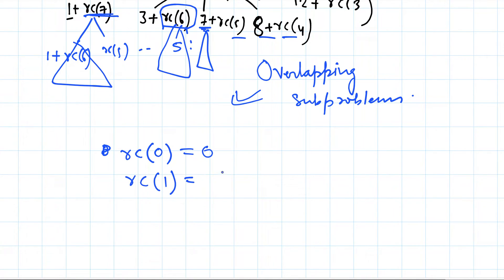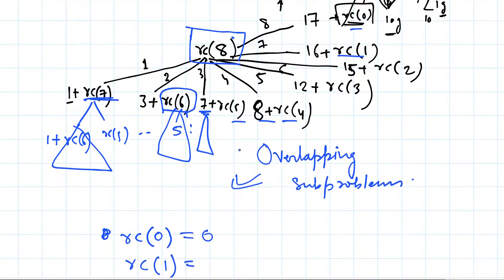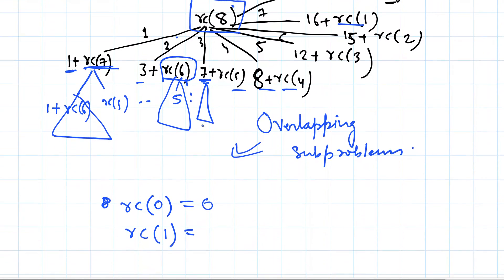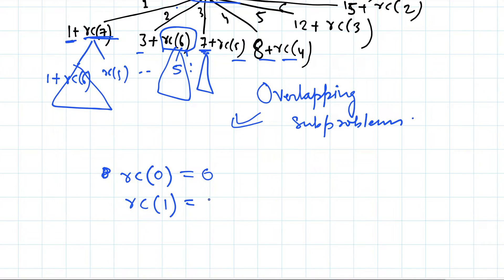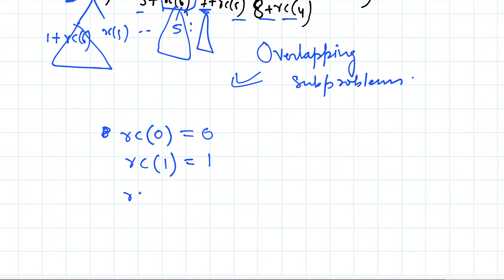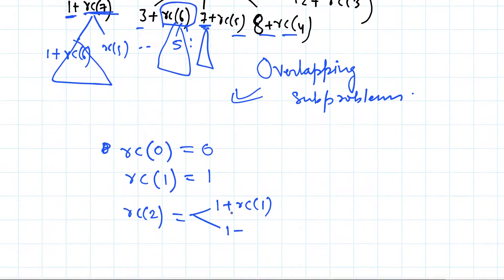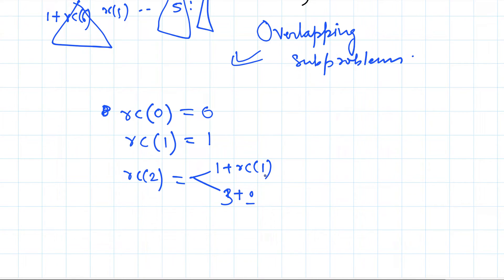Let's start solving bottom-up. RC(0) is zero — that's the base case. RC(1) has only one possibility so its price is one. For RC(2) we have: one plus RC(1) = two, or price of two units = three plus RC(0) = three. The maximum is three, so RC(2) is three.